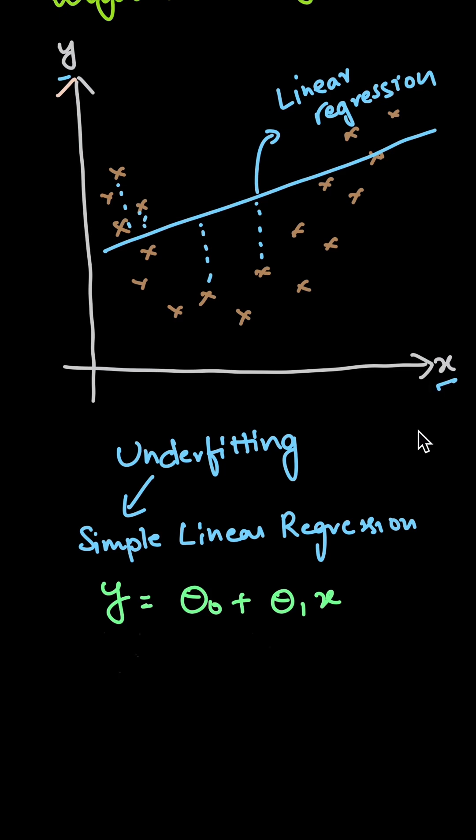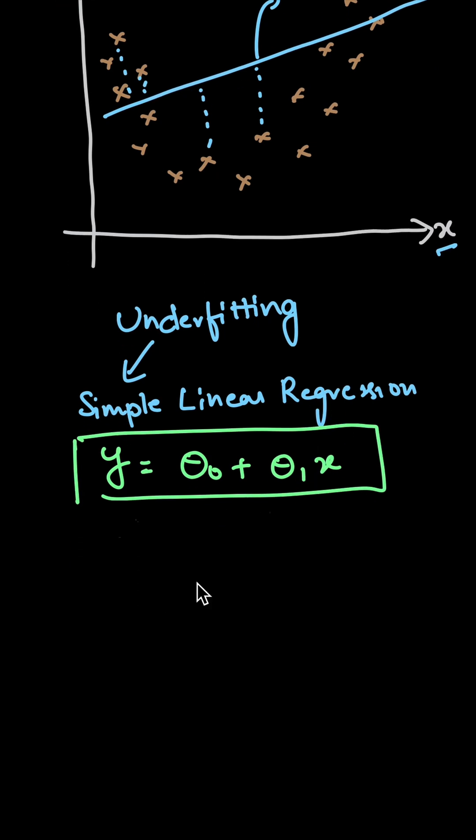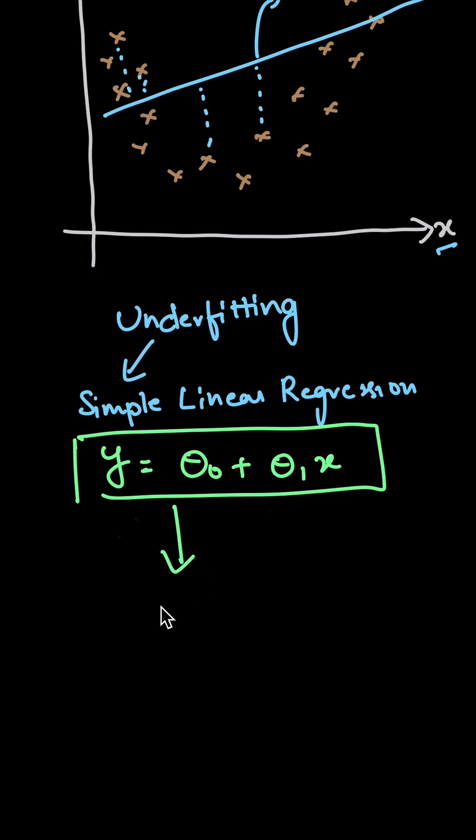So as we are having only one feature, our hypothesis will be like this. But as we are not interested in this particular underfitting condition, what can we do? We can apply polynomial regression. For polynomial regression, we just add some higher degree features like x square, x cube, and so on. But for now, let's only consider x square as our higher degree feature that we are including.